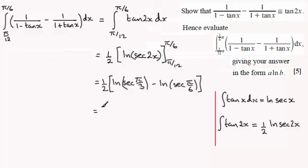And then we've just got the half and the sec of pi upon 3 is 2. So you've got the natural log of 2 minus the natural log of the sec of pi upon 6, which is 2 over root 3. So you've got the natural log of 2 divided by root 3.